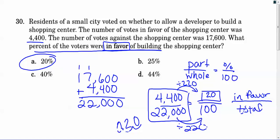It says residents of a small city voted on whether to allow a developer to build a shopping center. The number of votes in favor of the shopping center was 4,400. The number of votes against the shopping center was 17,600. What percent of the voters were in favor of building the shopping center?